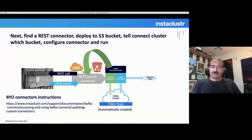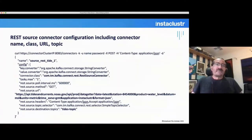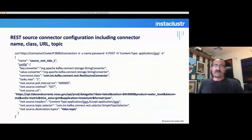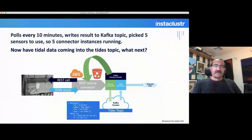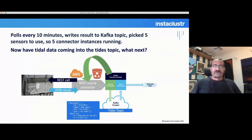Here's an example of the REST source connector configuration. You include details like the connector name, the class, the URL you're calling, and then the topic you want the data sent into in the Kafka cluster. There are a few other fields needed as well, so it can get quite complicated. It can also take some time to debug these configuration files. This example polls every 10 minutes and writes the result to the specified Kafka topic. I picked five sensors for the demo, so you need five connector instances running.